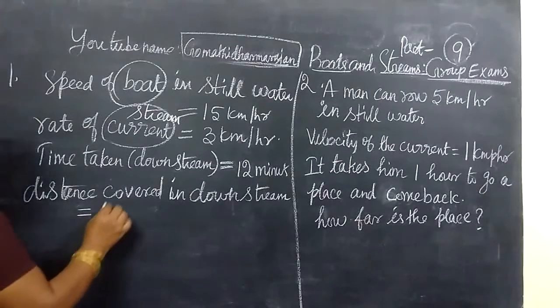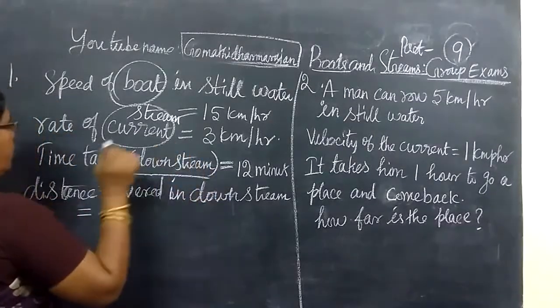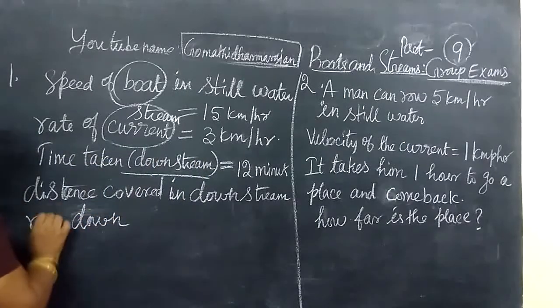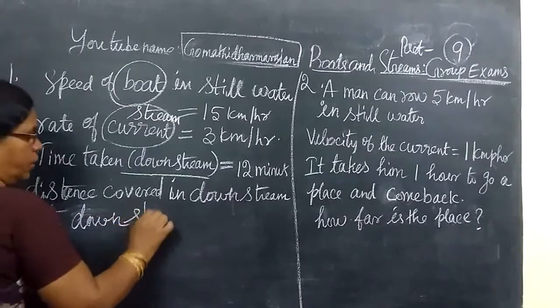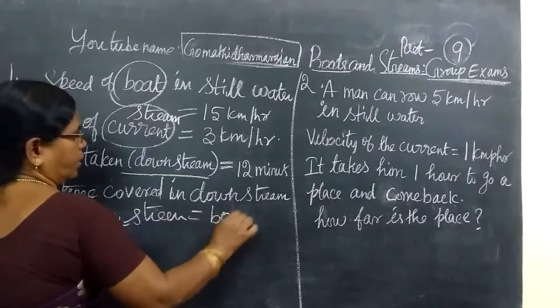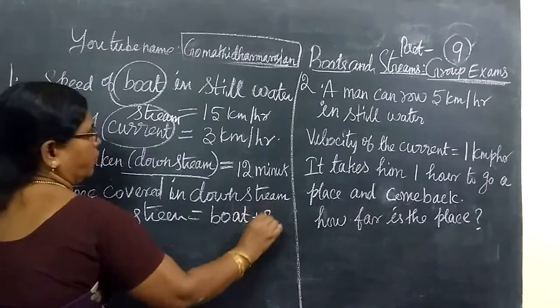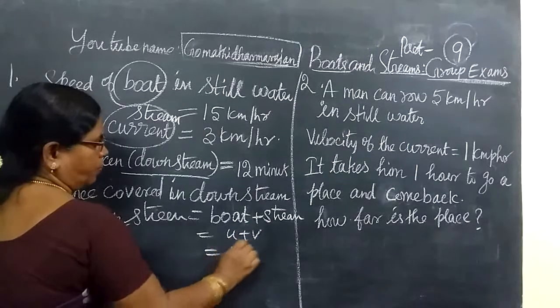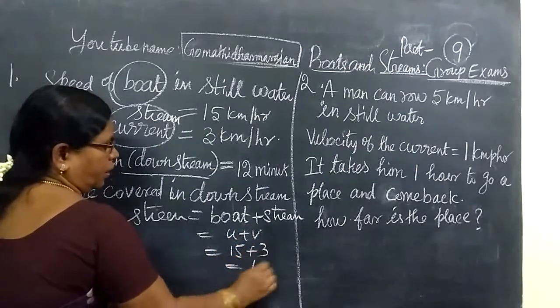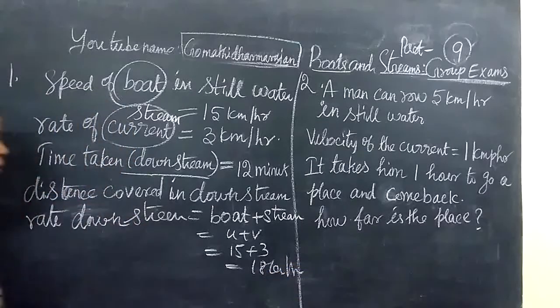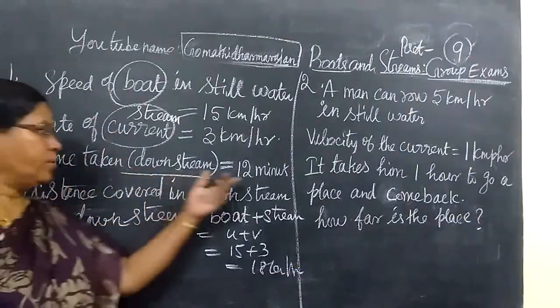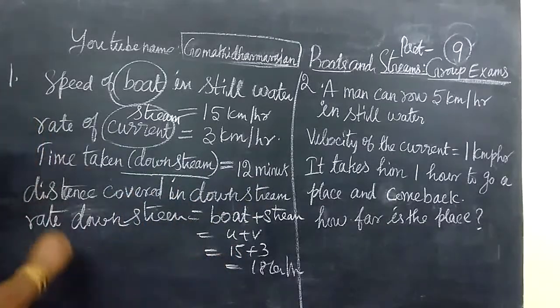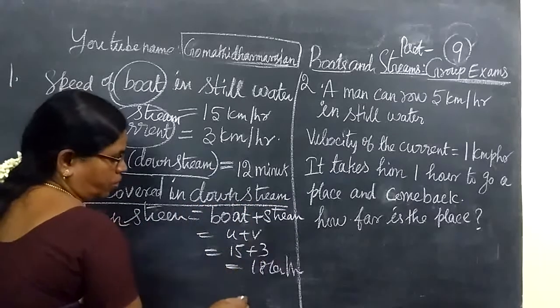So immediately you can add for downstream. Downstream rate equals U plus V. So U plus V means 15 plus 3 equals 18 km per hour. Here the time taken is 12 minutes for downstream.